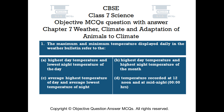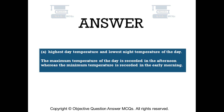Question number 1. The maximum and minimum temperature displayed daily in the weather bulletin refer to: Option A — highest day temperature and lowest night temperature of the day. Option B — highest day temperature and highest night temperature of the month. Option C — average highest temperature of day and average lowest temperature of night. Option D — temperature recorded at 12 noon and at midnight. The right answer is Option A: highest day temperature and lowest night temperature of the day.